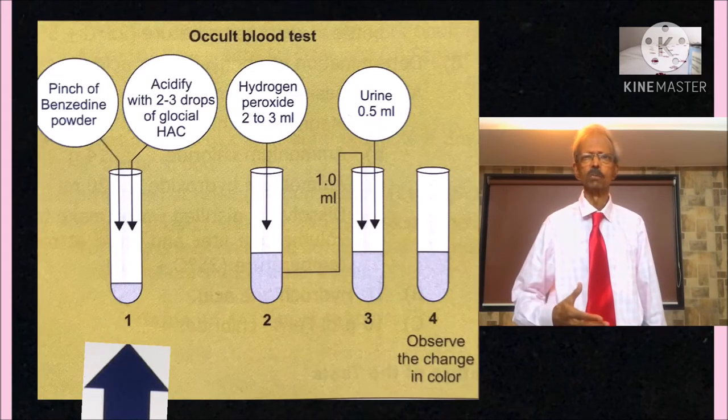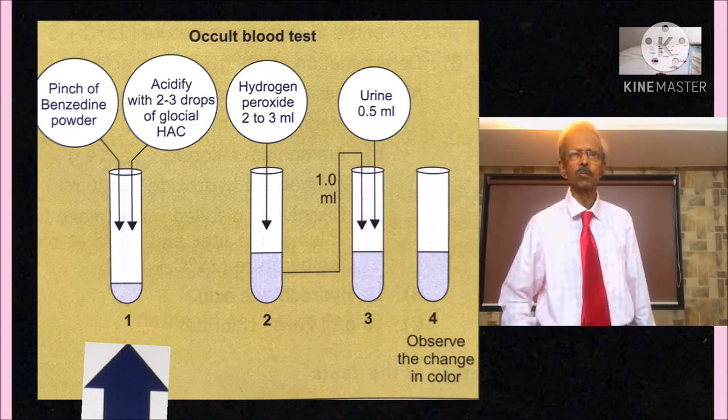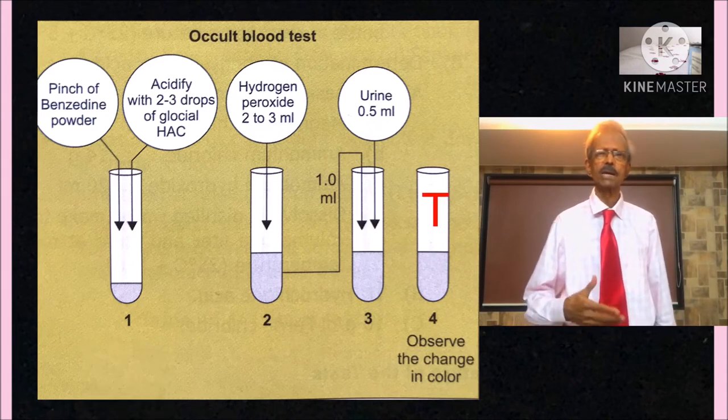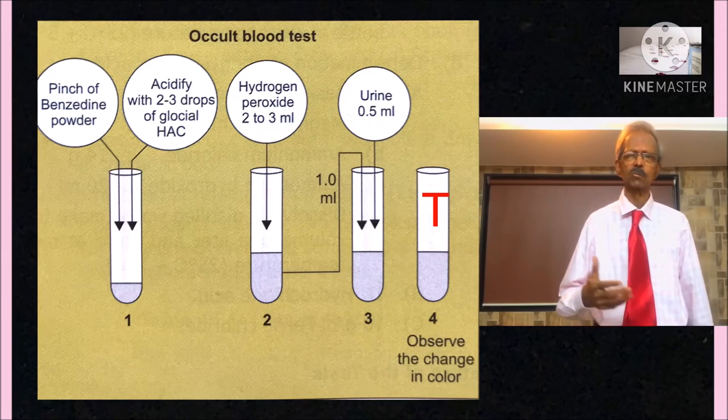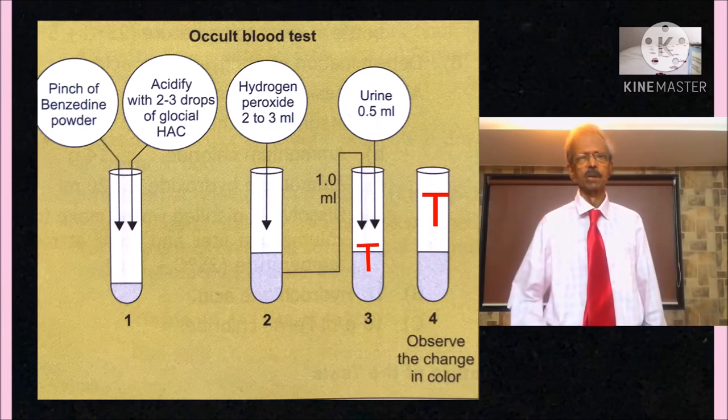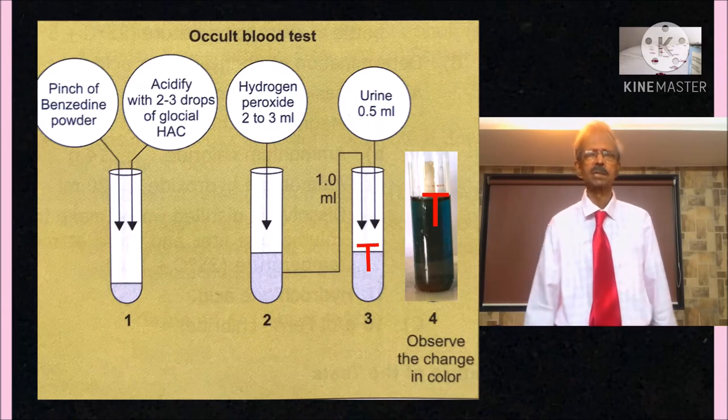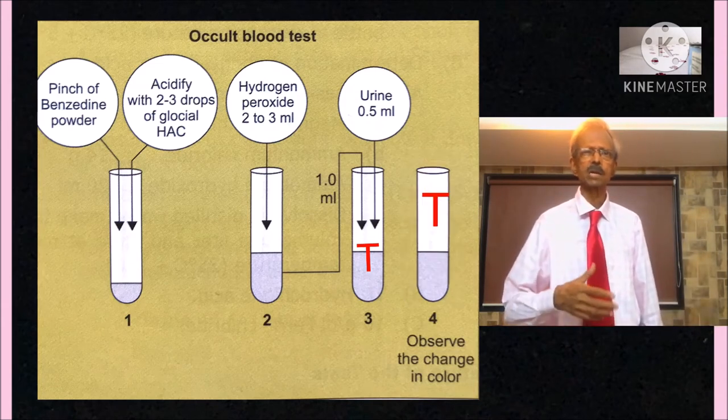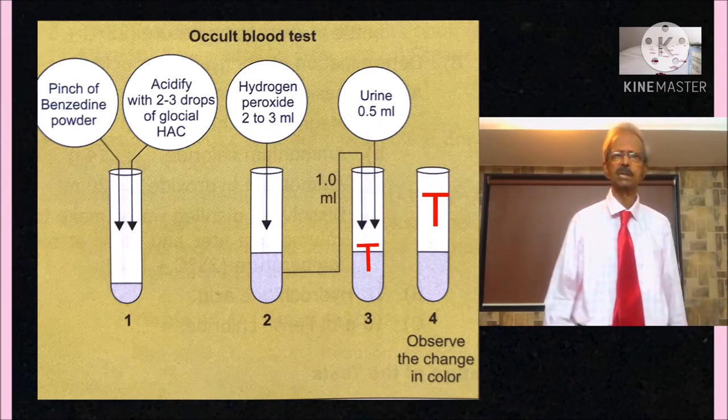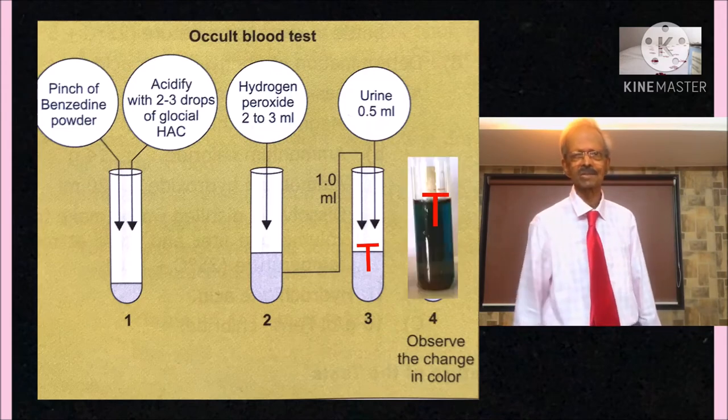For the determination of occult blood, place pinch of benzidine powder in a test tube and add 2-3 drops of glacial acetic acid and mix well. Then add about 2 ml of hydrogen peroxide solution and mix well again. From this, transfer 1 ml of supernatant to a test tube, labelled as T. To it, add 0.5 ml of urine and mix well. If color changes to blue, that means occult blood is present. No change in color means occult blood is absent. The reaction is, the peroxidase activity of hemoglobin decomposes hydrogen peroxide and liberated oxygen oxidizes benzidine to form a green colored complex.